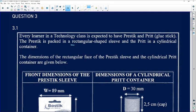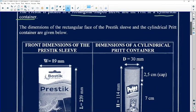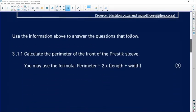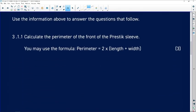We know already that we've got a rectangular shaped sleeve and then the Prit is put in a cylindrical container. So those are two shapes that we are given. The dimensions of the rectangular face of the Prestig sleeve and the cylindrical Prit container are given below. So for both, we are given the dimensions. And then it says there, use the information below to calculate.